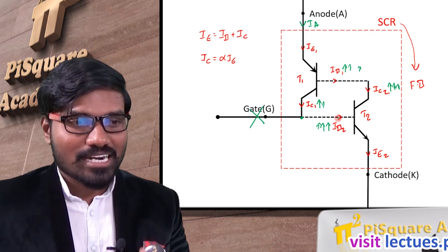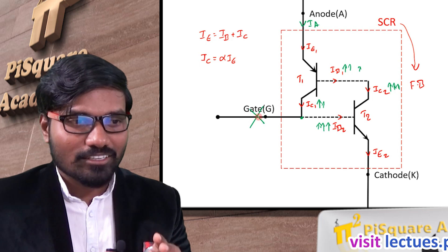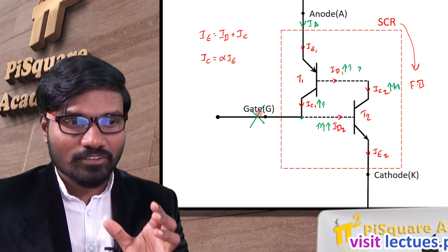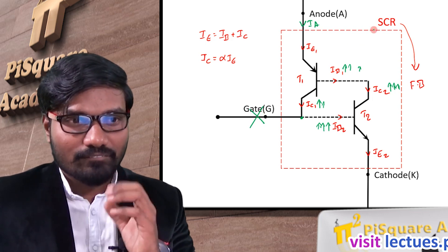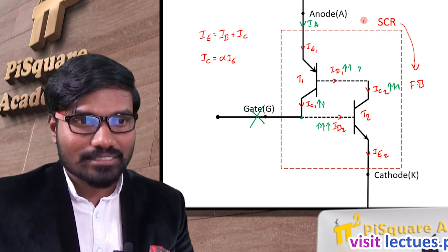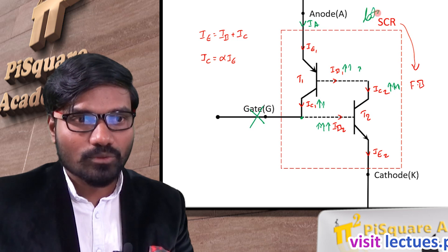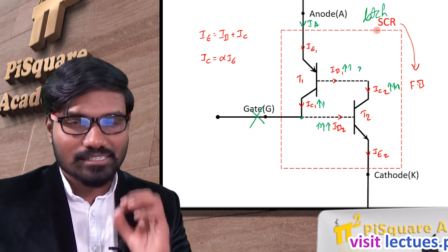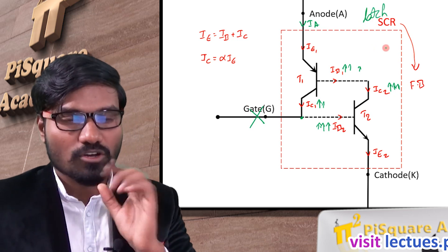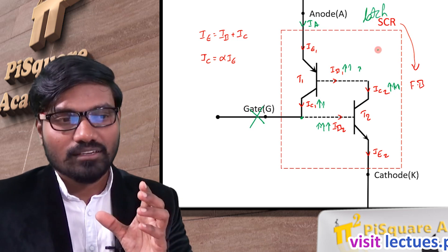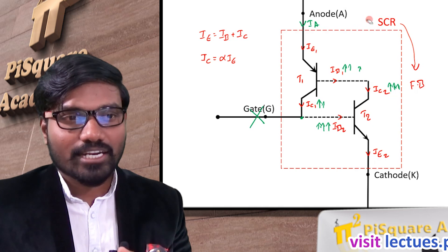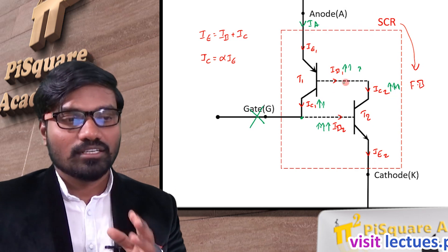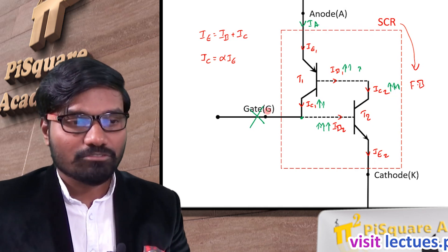So what do we understand? With the help of the gate, we can turn on the SCR — we can get the SCR into the latched state, and latched means it is in the on state. But we cannot turn it off with the help of the gate.